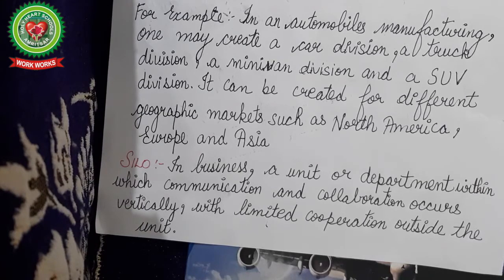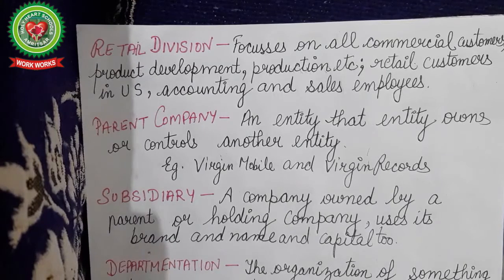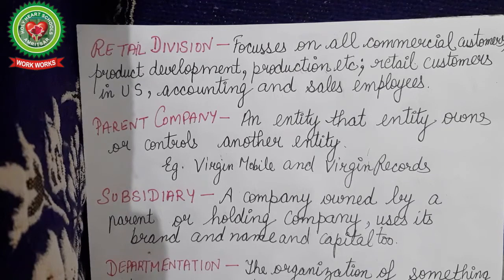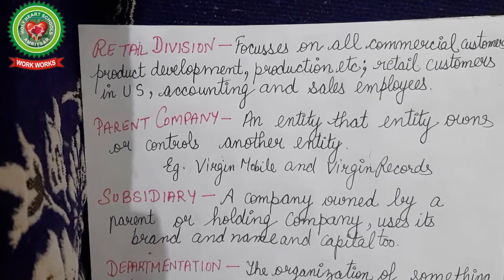The next key term is silo. In business, a silo is a particular unit or department within which communication and collaboration occurs vertically, with limited cooperation outside the unit. For example: production, sales, marketing, finance — every functional unit is called a silo. Next is retail division — focusing on all commercial customers, product development, production, and retail customers. A retail division is a term used to ultimately reach the targeted customer.